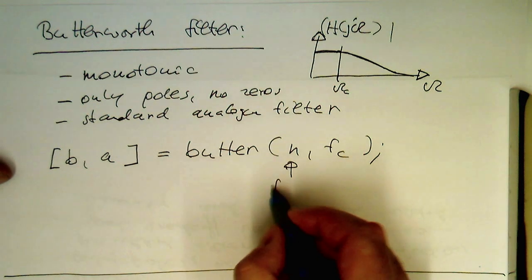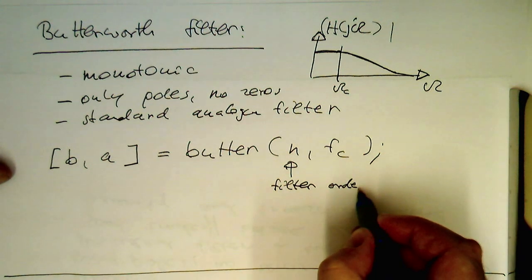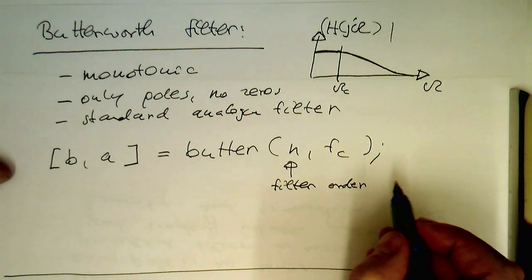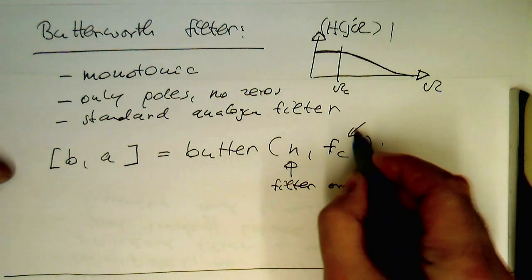So that's the filter order, essentially how many delay steps we're getting in our digital filter. And this is the cutoff frequency.